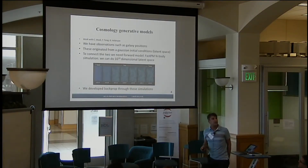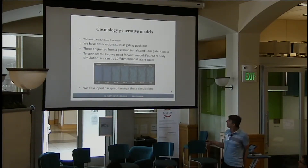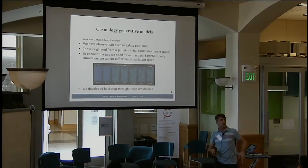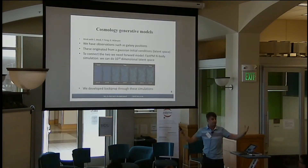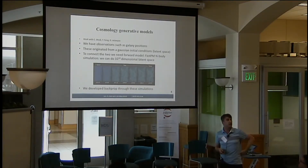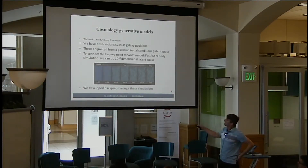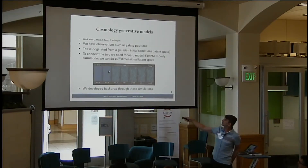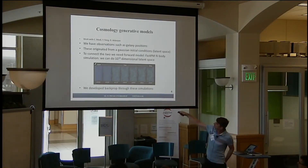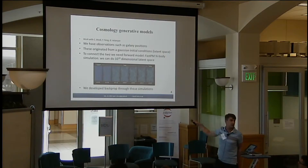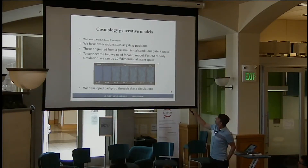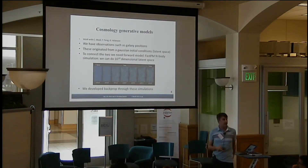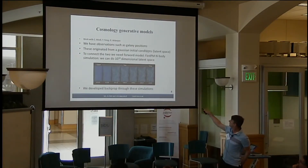Let me talk about generative models in cosmology. The idea is you start with some initial conditions, which are Gaussian. Then you forward model them, first doing linear evolution and then doing nonlinear evolution using so-called N-body simulations. You start in the early universe with a Gaussian field, evolve it, and it becomes more and more non-Gaussian. For this purpose, we developed very specialized fast N-body simulations, which we call FastPM. Right now we actually run 10^12 particles.